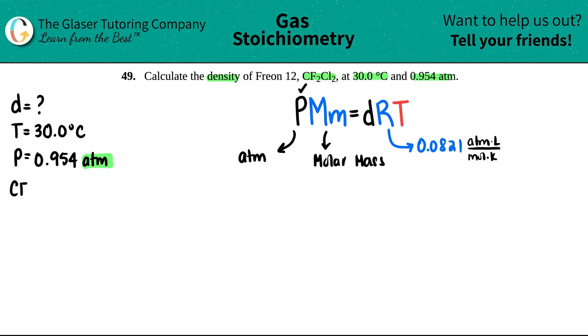So if I have CF2Cl2, how would we find a molar mass? Remember, a molar mass is gram per mole, and we just find that on the periodic table. You just got to calculate the molar mass. We have two fluorines, two chlorines, and one carbon, so just add them up. So let's see. I got 12.01 for the carbon, plus 19 times 2 for the fluorine, and then 35.45 times 2 for the chlorine. And I get 120.91 gram per mole, and this is going to be the MM. So we're good with this one.